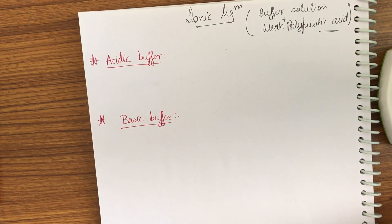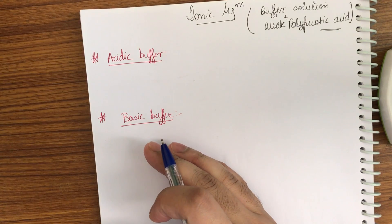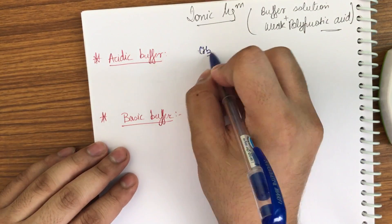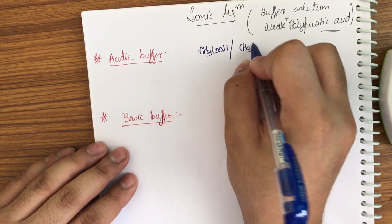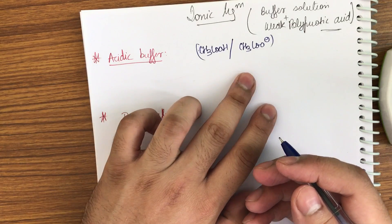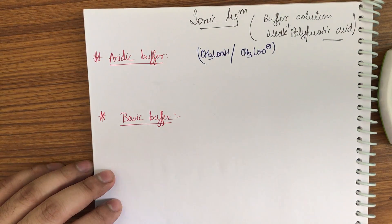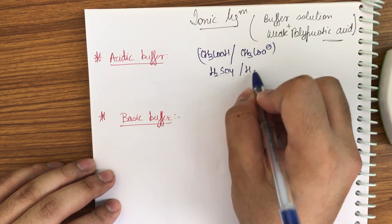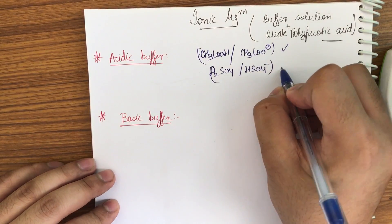First we must learn the definitions. An acidic buffer is one in which we have an acid and its conjugate base. For example, CH₃COOH is the acid and CH₃COO⁻ is the conjugate base — this is an acidic buffer. Similarly, dilute H₂SO₄ and HSO₄⁻ is also a buffer.